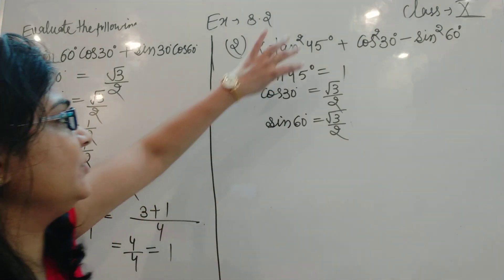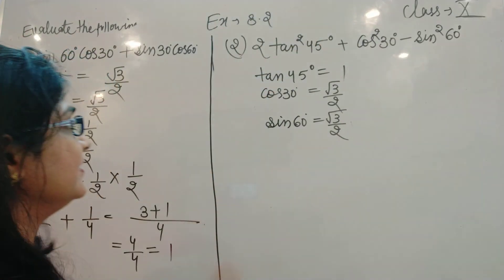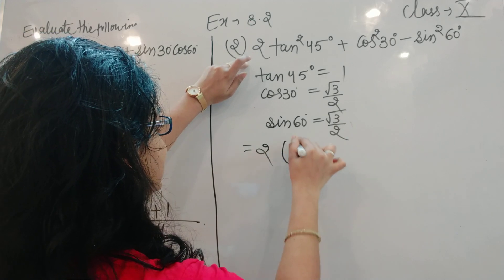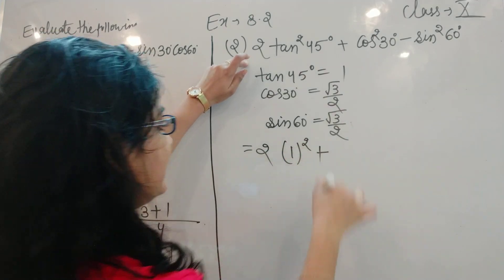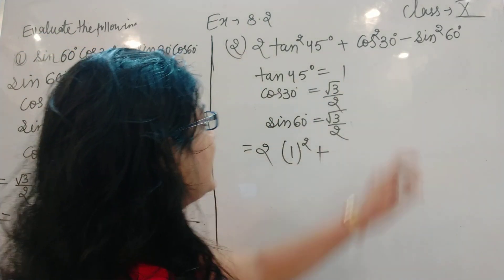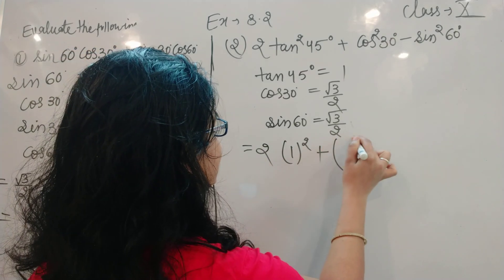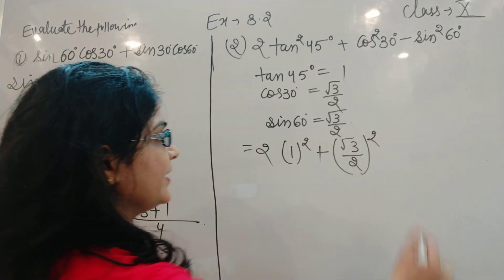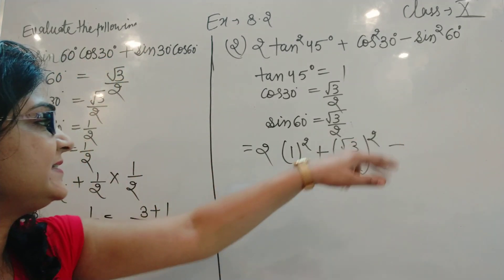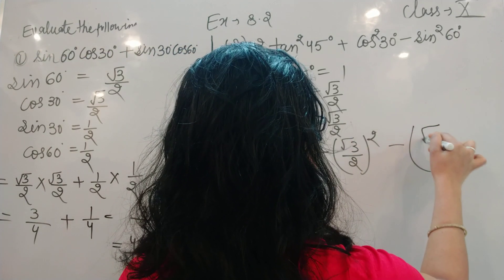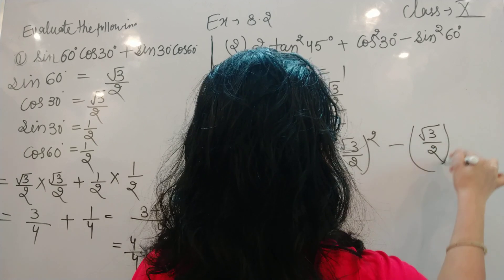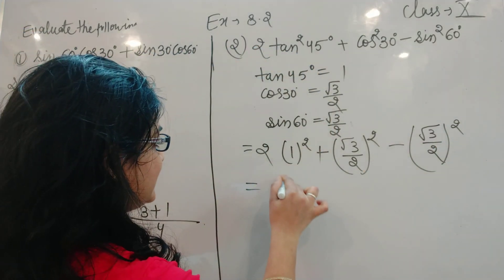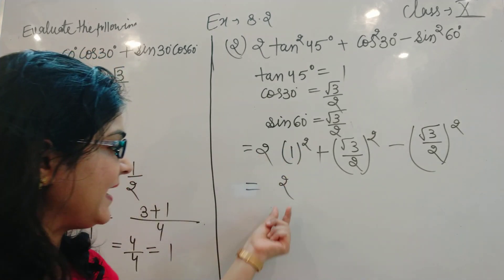Now we put all the values in. 2 tan² 45° means 2 × (1)² = 2. Plus cos² 30° means (√3/2)² = 3/4. Minus sin² 60°, which means (√3/2)² = 3/4. So 1² = 1, multiplied by 2 gives 2.